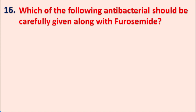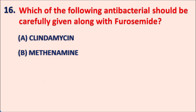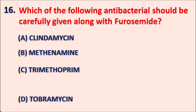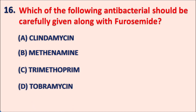Sixteenth one: which of the following antibacterials should be carefully given along with furosemide? Options are A: clindamycin, B: methenamine, C: trimethoprim, D: tobramycin. Furosemide is a loop diuretic, so which antibacterial should be carefully given along with it? The right answer is tobramycin.